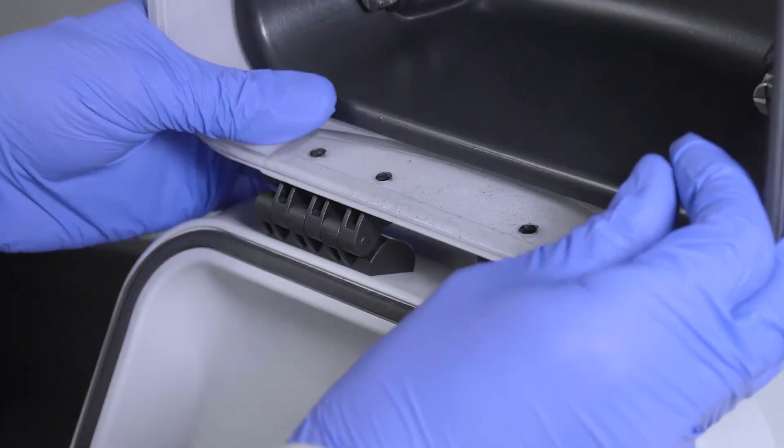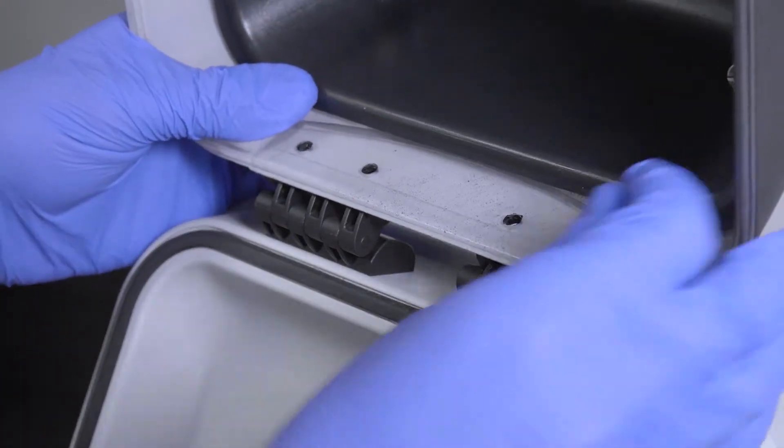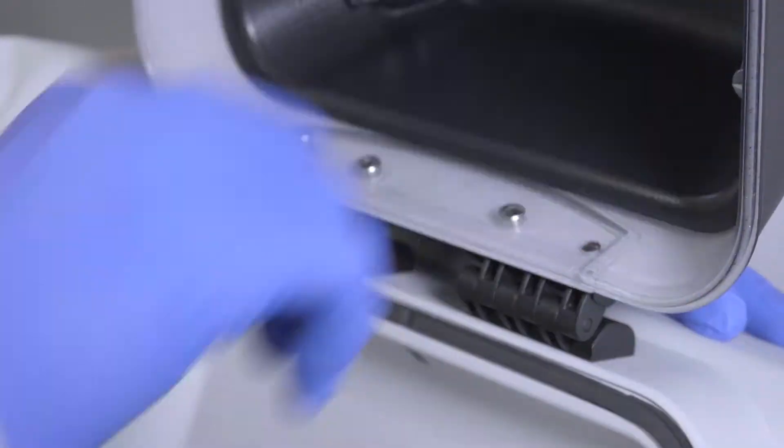Align the black cryolid onto the BeadRuptor and replace the four screws using the Allen key, ensuring that the lid is firmly secured.